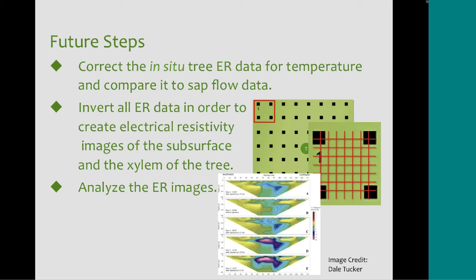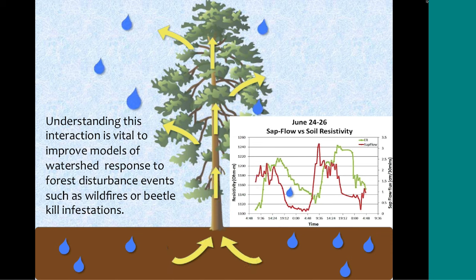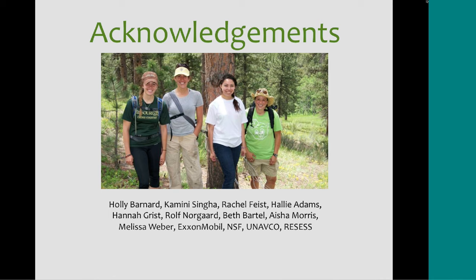This is another example of electrical resistivity images. Once we have those images, we can analyze the data to see where water is flowing throughout the day — whether it's moving toward the tree or elsewhere — and create further hypotheses on the interactions between tree transpiration and soil moisture content. I'd like to end by restating the importance: not only might these interactions affect how much water is available for humans, but in states like Colorado affected by wildfires and beetle infestations, understanding them could help us study how watersheds respond to large forest disturbances. Thank you to everyone for being here and for helping me do this project.